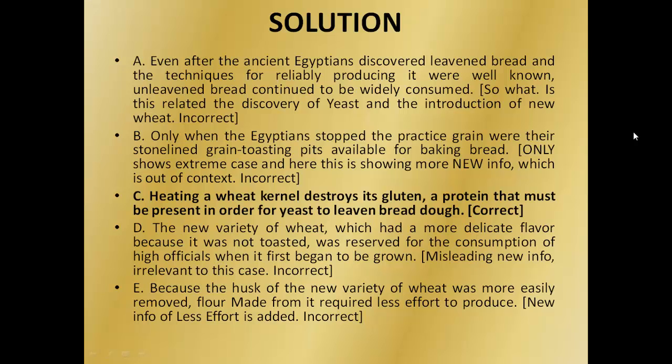Option B says only when the Egyptians stopped the practice of grain toasting were the grain-toasting pits available for baking bread — this only shows an extreme case and introduces new information out of context, so B is ruled out. Option C says heating of wheat kernels destroys gluten, a protein that must be present in order for yeast to leaven bread dough — this is our correct answer, since it explains why the two developments are interrelated. Our answer is C.